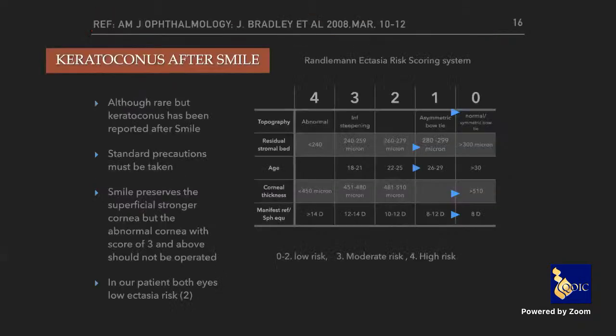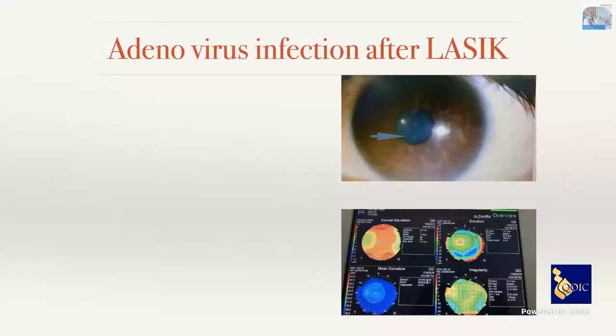One of today's challenges is detecting keratoconus early before refractive surgery. The Randleman ectasia risk scoring system is a very good guide.